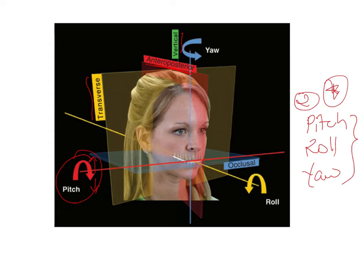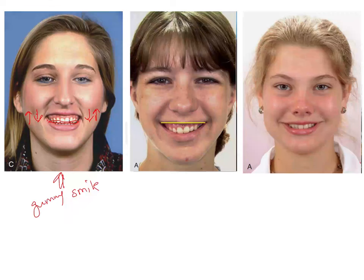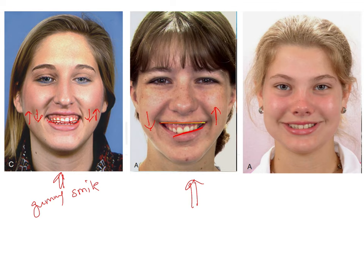The second rotation is roll — the up and down deviation around the transverse axis. Clinically, this appears as a downward rotation on one side and an upward rotation on the other side of the dentition. For example, there may be a downward rotation on the right side and an upward rotation on the left side. This asymmetric up-and-down rotation around the transverse axis is what is exhibited as roll.